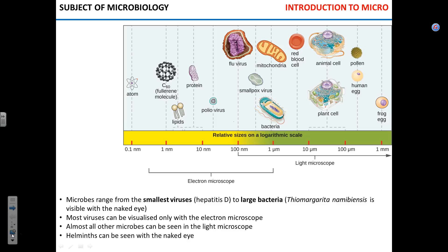Almost all microbes - well not all, but most - can be visualized using light microscopy, things like bacteria. Even large viruses like smallpox can be seen in the light microscope. Of course, the range is huge. The smallest viruses like polio or hepatitis D can be as small as 20 to 30 nanometers - about a thousand times thinner than a human hair.